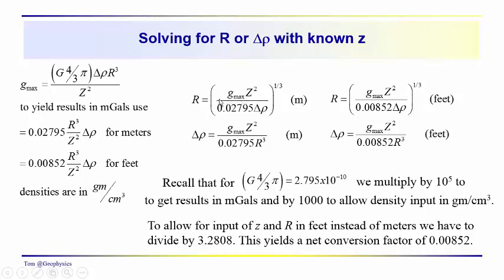These expressions are solutions for the radius or the density contrast based on whether we're solving in meters, using meters for R and Z, or whether we're using feet for R and Z in this expression. Our task is, we know what Z is. We've gotten Z from the analysis of the shape function. We're now interested to get information about the scale of the object in terms of R or the density contrast with the surrounding medium. These are the equations that you would use depending on whether the depths and dimensions are in feet or whether they're in meters.